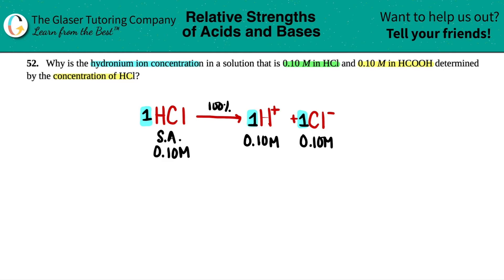Let me just box this off because we'll be coming back to this because the question is, why is the hydronium ion concentration only determined by HCl? Keep in mind that hydronium is the H plus. So for right now, we know that we have 0.1 molarity of H plus. Now, let's talk about this other acid.